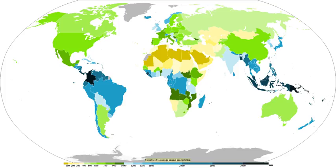Related topics include: list of meteorology topics, basic precipitation, bioprecipitation — the concept of rain-making bacteria, mango showers — pre-monsoon showers in the Indian states of Karnataka and Kerala that help in the ripening of mangoes — sunshower — an unusual meteorological phenomenon in which rain falls while the sun is shining — and wintry showers — an informal meteorological term for various mixtures of rain, freezing rain, sleet and snow.